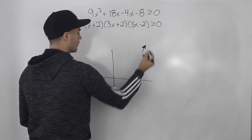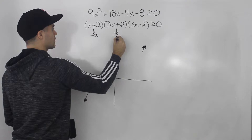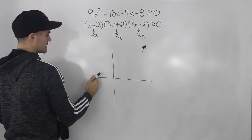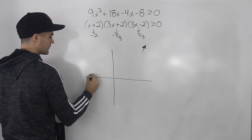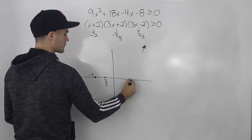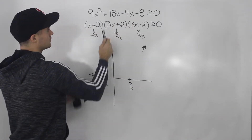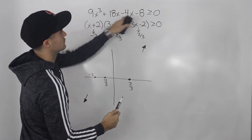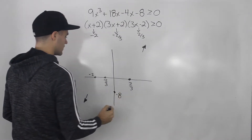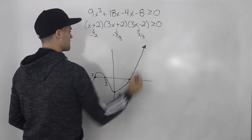So we know the end behaviors are going to be from quadrant three to quadrant one. The x-intercepts are negative two, negative two over three, and positive two over three. Negative two over three is about negative 0.66, so it's to the right of negative two. So negative two would be here, then negative two over three, then positive two over three. For the y-intercept, if we plug in zero for all the x's in the expanded polynomial, we get negative eight. So the graph passes through negative eight, and it's going to look something like this.